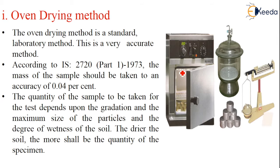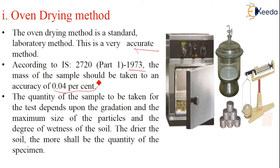The oven drying method is a standard laboratory method and it is a very accurate method compared to other methods. According to IS 2720 part 1, 1973, the mass of the sample should be taken to an accuracy of 0.04%. The quantity of the sample to be taken for the test will depend upon the gradation and the maximum size of the particles and the degree of wetness of the soil. The drier the soil, the more shall be the quantity of the specimen. This should be remembered.